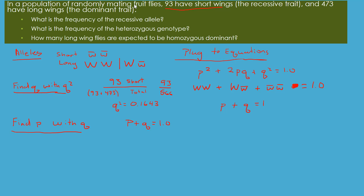So q² ≈ 0.16. To get q, we take the square root of 0.16, which gives us q = 0.4. Now let's find p: p = 1.0 − 0.4 = 0.6. So p = 0.6 and q = 0.4.